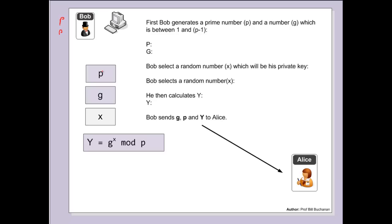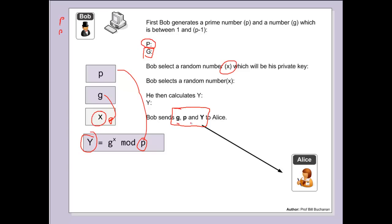Inside the ElGamal method, we initially create a prime number P. Then we create a number G which is somewhere between 1 and P minus 1. The next step is that we generate a random value X. From here we calculate a value Y, which is G to the power of X, then take the modulus with P. The key that is sent is P, G, and Y — that's Bob's public key. The X value is kept as his private key.